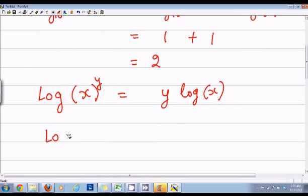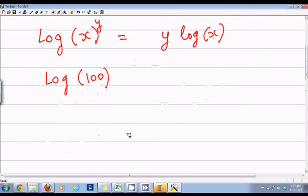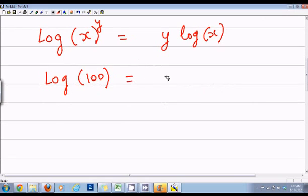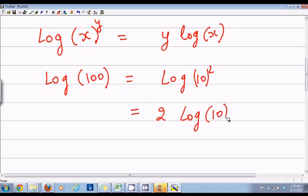We have log of 100 and that is equal to log of 10 raised to power 2, and that will equal to 2 log of 10, and that is equal to 2. So we get the same number using this property. That's another property of logarithms.